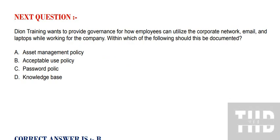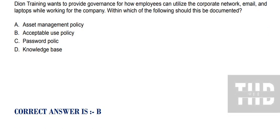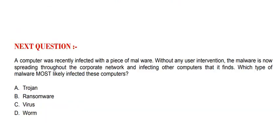Question: Dion Training wants to provide governance for how employees can utilize the corporate network, email, and laptops while working for the company. Within which of the following should this be documented? Option A: Asset Management Policy. Option B: Acceptable Use Policy. Option C: Password Policy. Option D: Knowledge Base. The correct option is Option B.